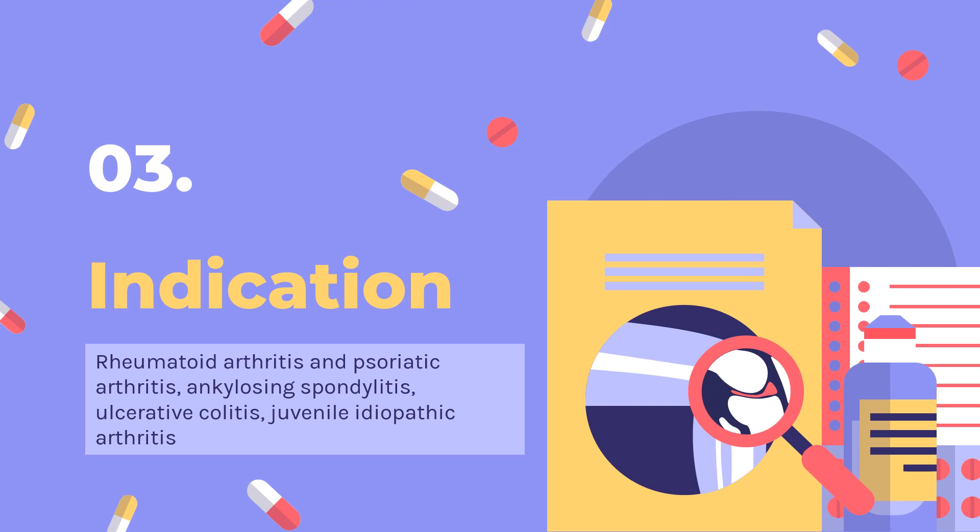Golimumab is also indicated as a single agent in patients with moderate to severe ulcerative colitis (UC) who require chronic steroids or have experienced intolerance or only a partial response to previous medications. It is additionally indicated for active polyarticular juvenile idiopathic arthritis (pJIA) in patients 2 years of age and older.